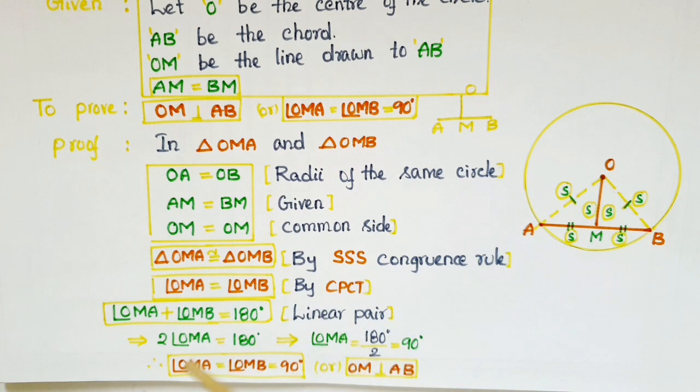Therefore, angle OMA is equal to angle OMB is equal to 90 degrees or OM is perpendicular to AB.